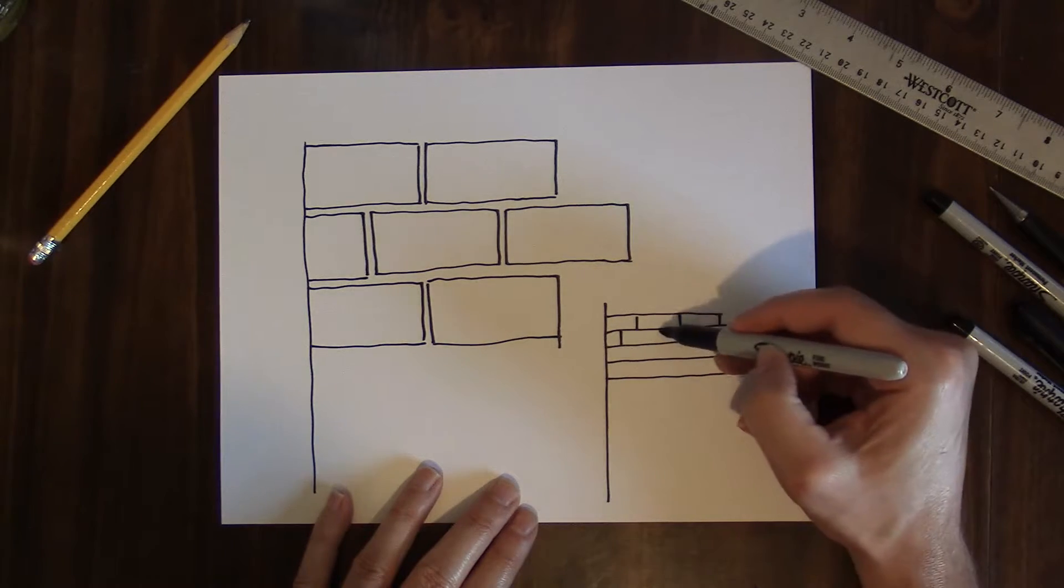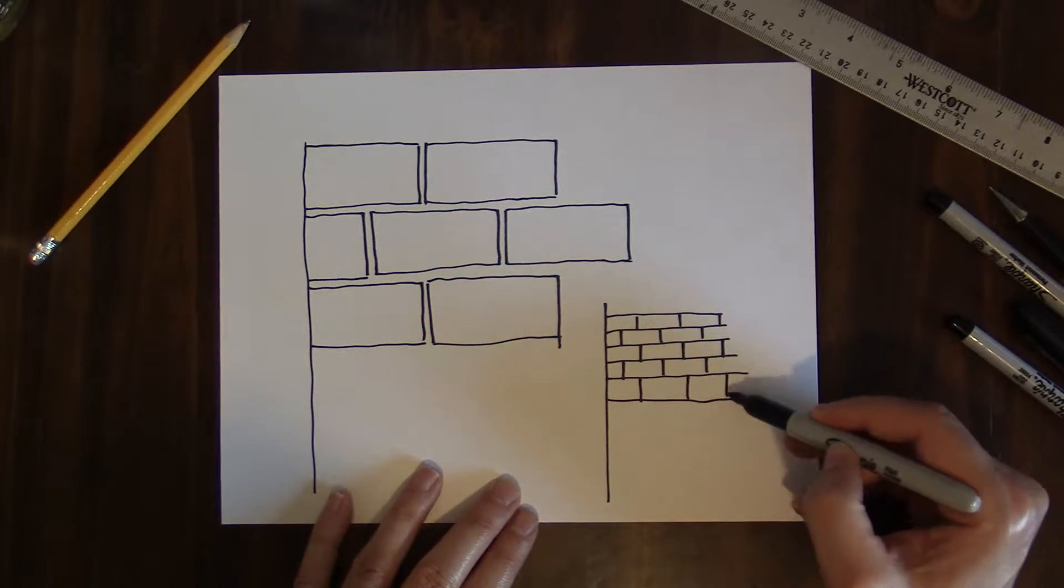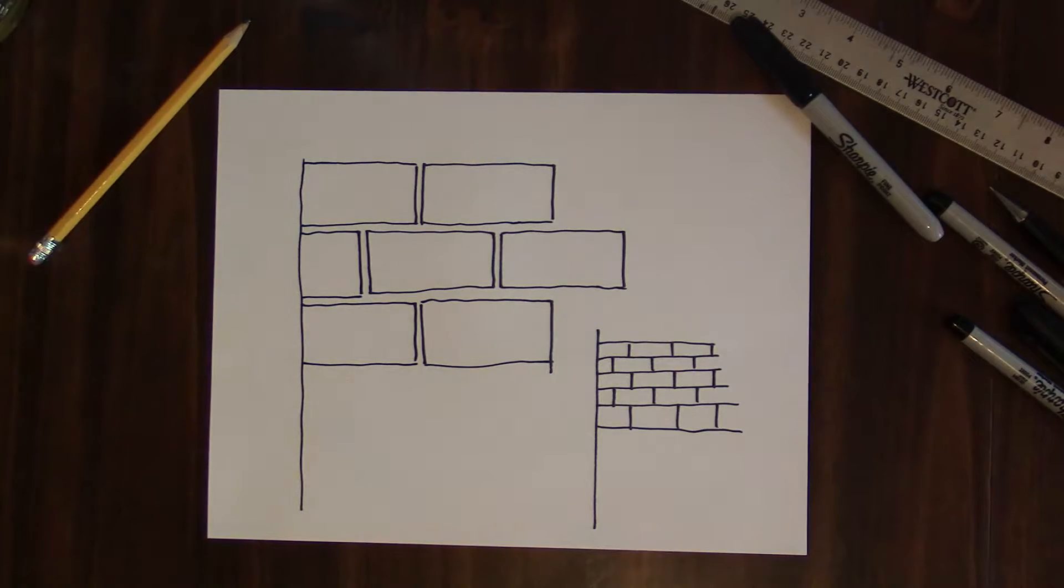When you draw a brick wall from farther away, you leave out the mortar gap. Just draw the bricks themselves. The lines represent the bricks and the mortar.